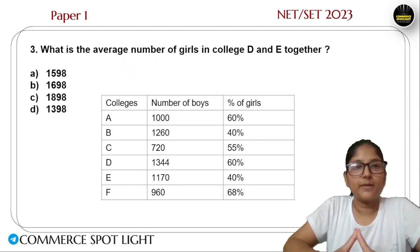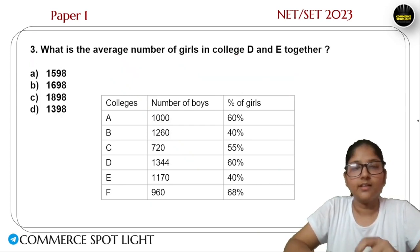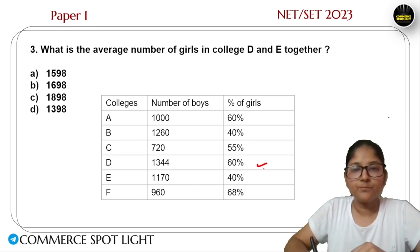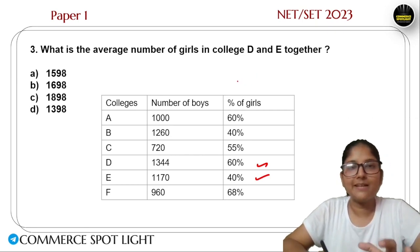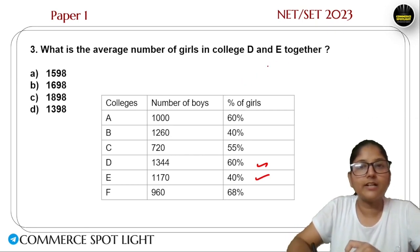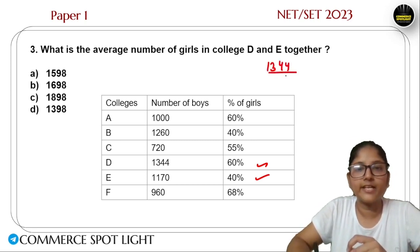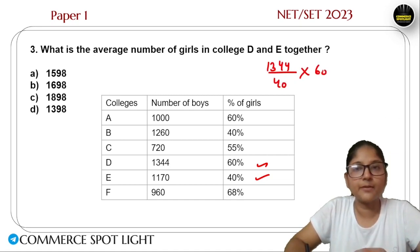What is the third question? What is the average number of girls in College D and College E together? First, the percentage is given and the number of boys is given. So we need to find the number of girls. For College D, I know 40% equals 1344, so I need the value of 60% girls.